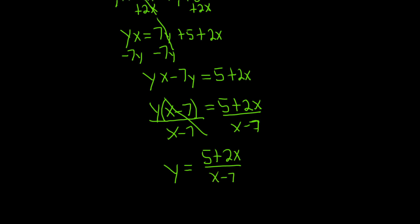And the very last thing we can do is just to write our answer using the correct notation. So the correct notation for the inverse function is the following. It's f inverse of x, and it's equal to 5 plus 2x over x minus 7. And that would be the final answer.